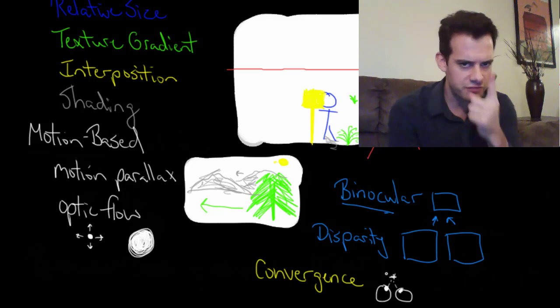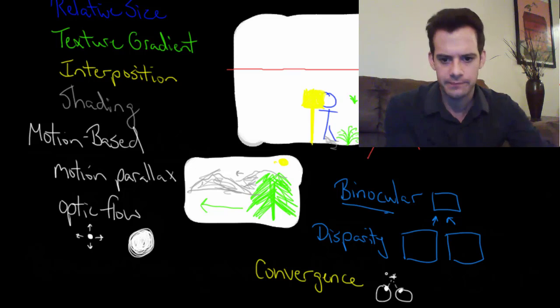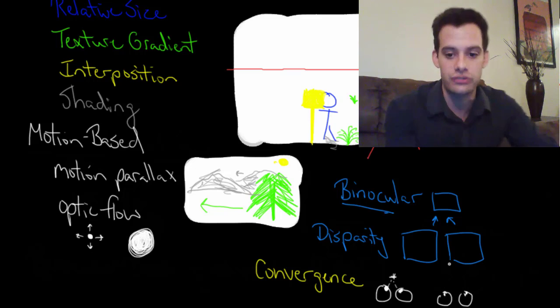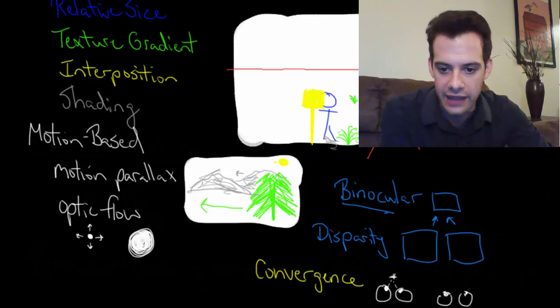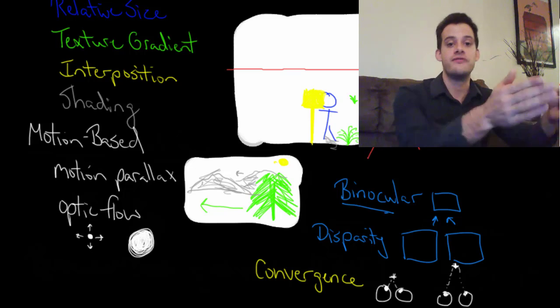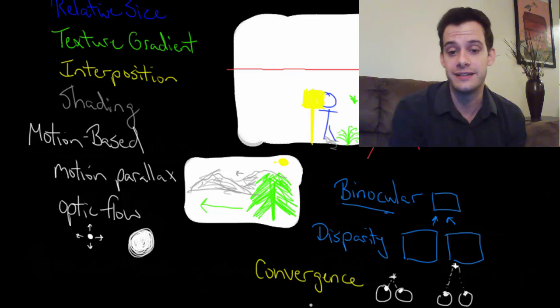And so that tells me that the thing I'm looking at, if I have to angle my eyes that way, it's very close to me. Whereas if I'm looking at the same object, but my eyes are pointing mostly straight ahead, the angle is different. The point where they converge means that they're at different angles. That tells me that the object I'm looking at is farther away from me. So that's the final cue that we use to help judge depth.